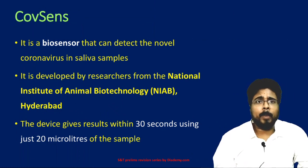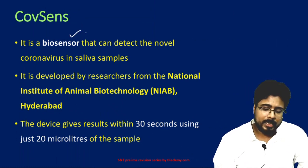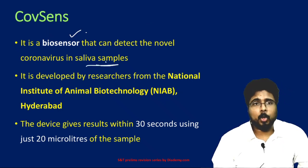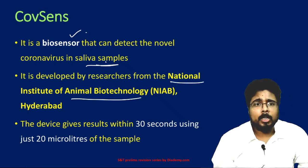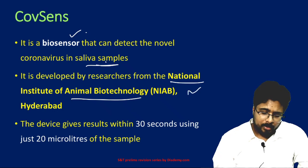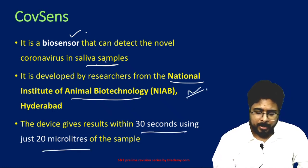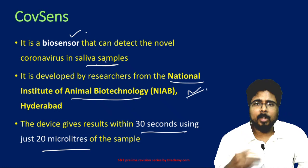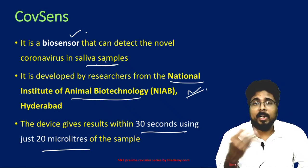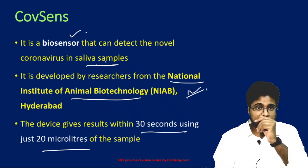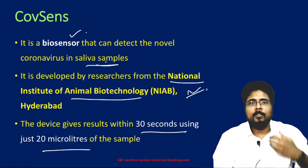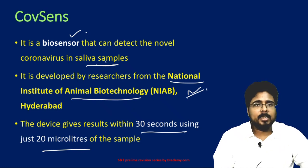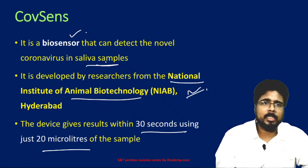Next, COVSENS. It is a biosensor that can detect the novel coronavirus in saliva samples, developed by the National Institute of Animal Biotechnology, Hyderabad. It can give results within 30 seconds using just 20 microliters of the sample. It is essentially a rapid test — results are obtained very fast.